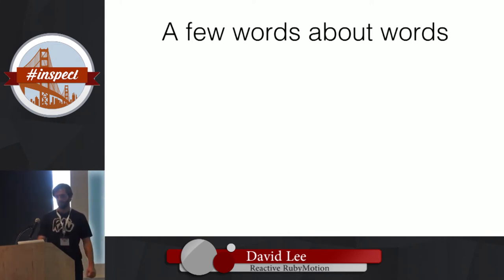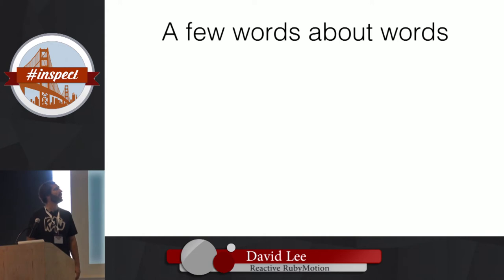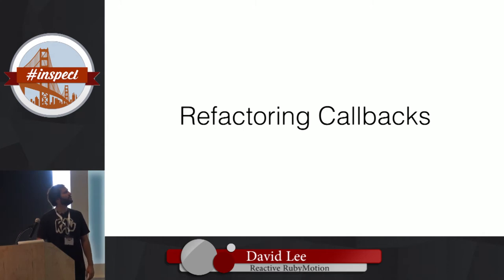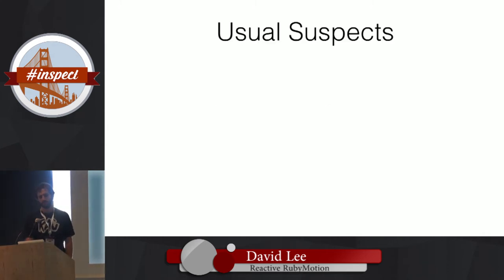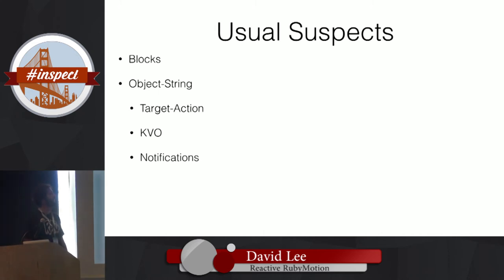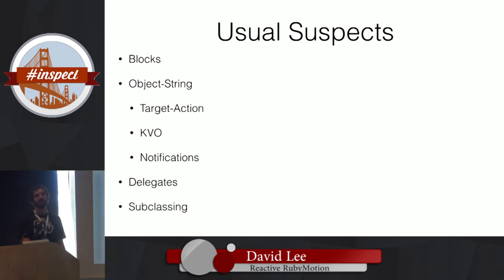As I've been alluding to, there's a lot of terminology in ReactiveCocoa — not only classes but many operators, things you do to signals. Don't get caught up on it. I think Cocoa has a way bigger vocabulary than ReactiveCocoa. To be a Cocoa developer using Apple's documentation you need to know even more concepts. So let's figure out signals by refactoring callbacks. Types of callbacks we do in Ruby and Objective-C: blocks; what I call 'object-string' — target-action, KVO, notifications where you give a string or selector and say 'tell me when this happened'; delegates — similar but with an API involved; and even subclassing, like subclassing UIView to get lifecycle events.